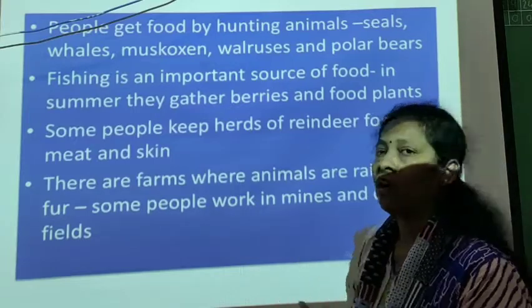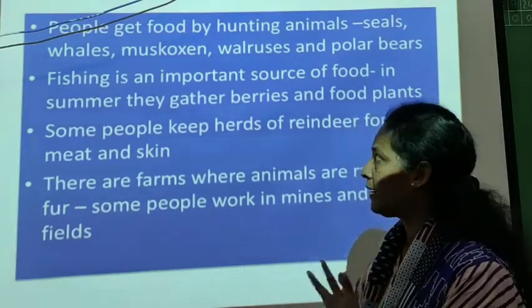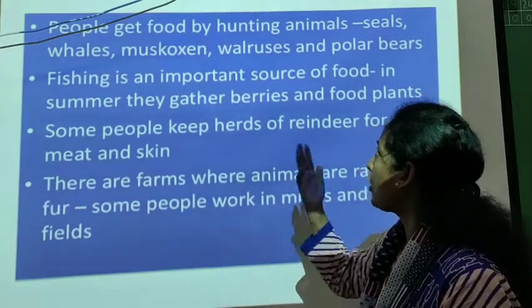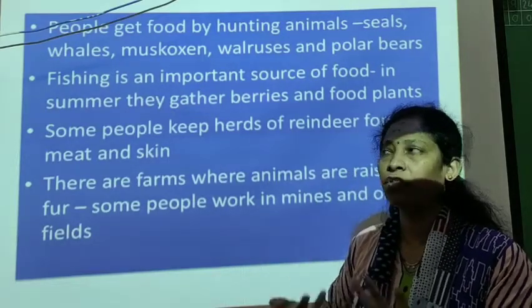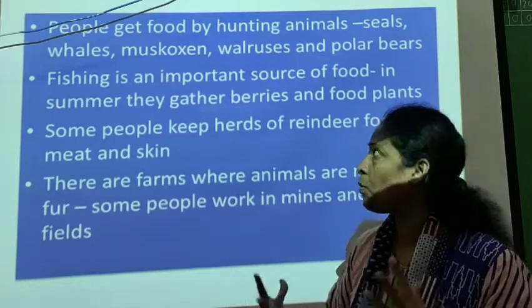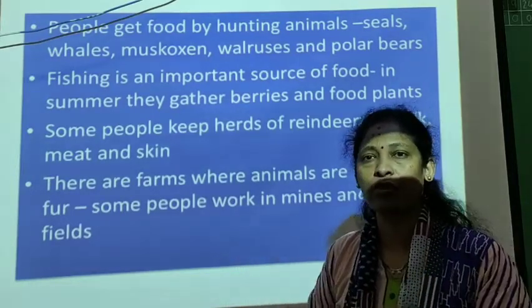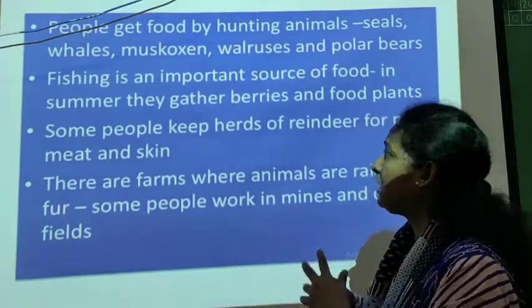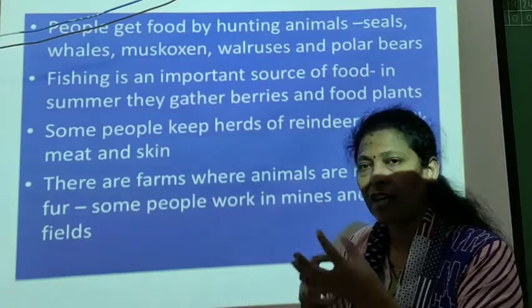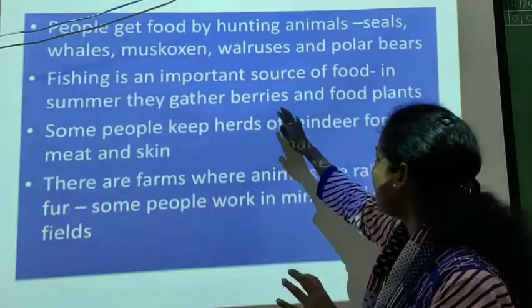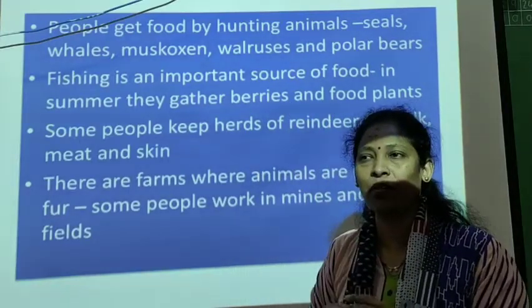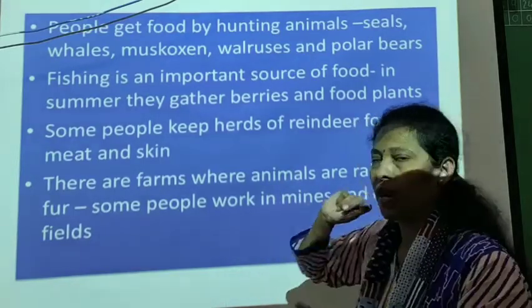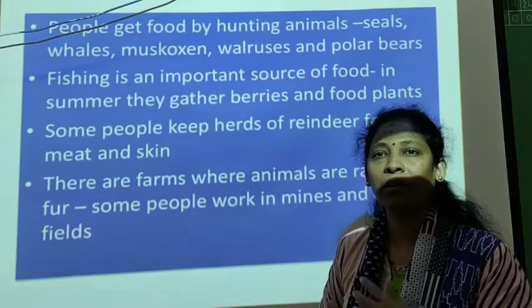People get food by hunting animals like seals, whales, musk oxen, walruses, and polar bears. Fishing is an important activity here and a source of food for the people. Even in summer, they gather berries and food plants which are grown there — these are also a source of food for the people.